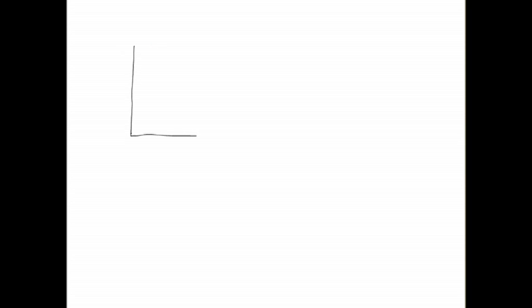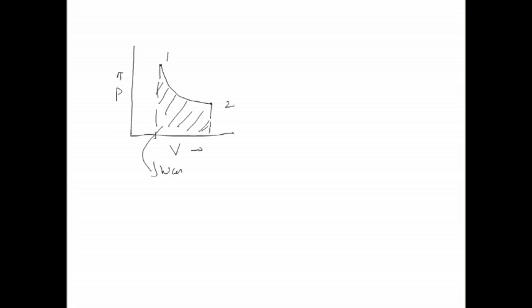This is only valid for quasi-static processes. If we want to draw the PV diagram for work transfer: this is the PV diagram with two processes — initial process 1 and final process 2. The area under the curve represents the total work transfer, and w12 equals ∫p dv.